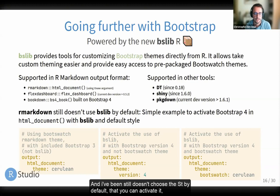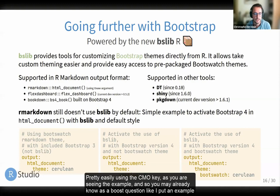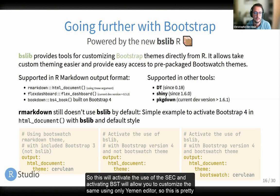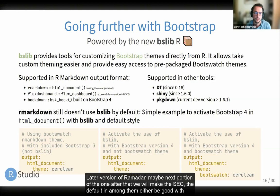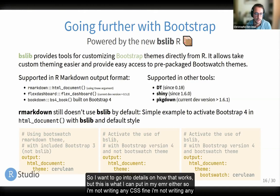R Markdown still doesn't use bslib by default, but you can activate it easily using the theme YAML key, as shown in the example. You may already know Bootstrap themes — I put an example with the Cerulean theme here. This will activate bslib, allowing you to customize the theme using only the YAML header. In a later version of R Markdown, we will make bslib the default — either with Bootstrap 3 as today, or maybe using the bslib default which is currently Bootstrap 4 and will soon be Bootstrap 5.